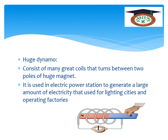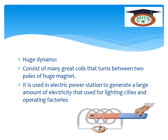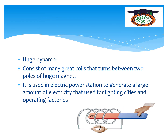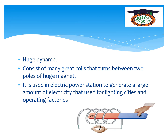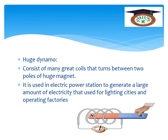The huge dynamo consists of many great coils that turn between the two poles of a huge magnet. The idea of the huge dynamo is to convert kinetic energy or mechanical energy into electric energy. As shown, when a magnet is inserted into a coil, kinetic energy changes to electric energy. The huge dynamo is used in electric power stations to generate large amounts of electricity for lighting cities and operating factories.